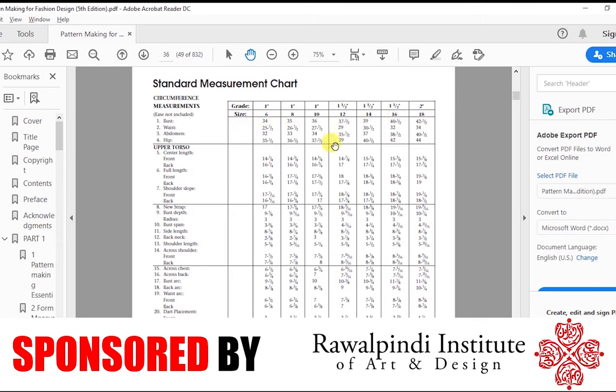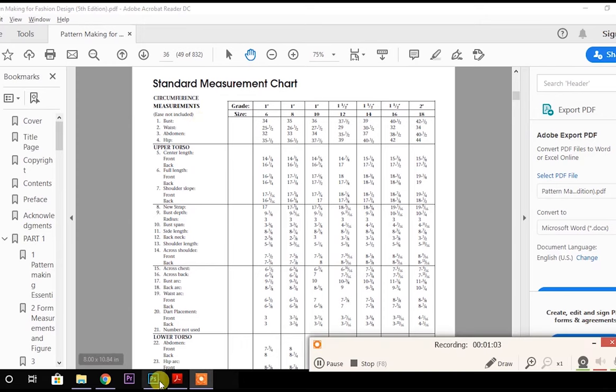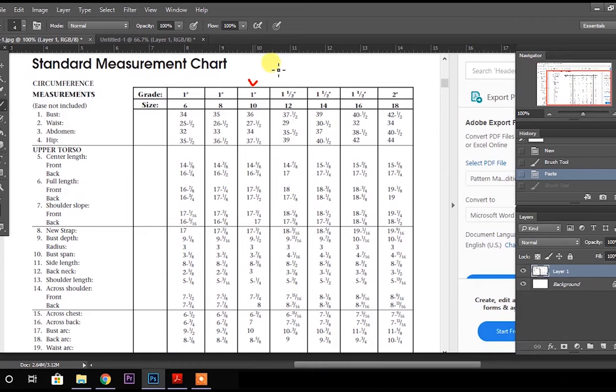These sizes here are all American market sizes because this is an American book. So initially when we learn our work and create patterns, we have to follow a standard size. So we will follow size 10. You have to put your book on the pencil so you will know this is the size that you are supposed to follow, size 10.